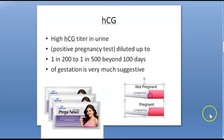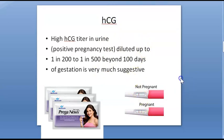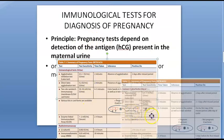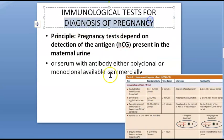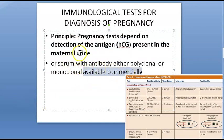How is the HCG test done? Basically, you have a card test which detects HCG. An antibody to HCG is placed on the plate, and when you put one drop of urine, it binds to the HCG and gives a line. So this is an immunological test for the diagnosis of pregnancy — it detects the antigen HCG using a commercially available antibody. You can do either a blood test or a urine test.